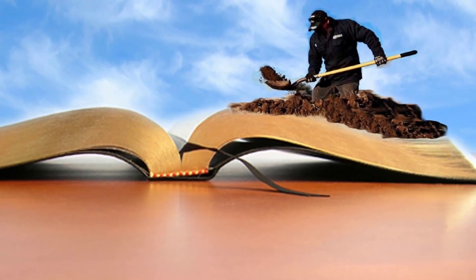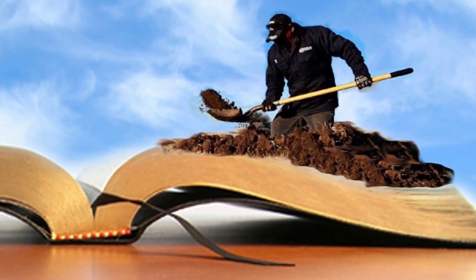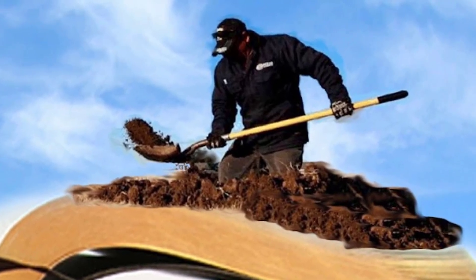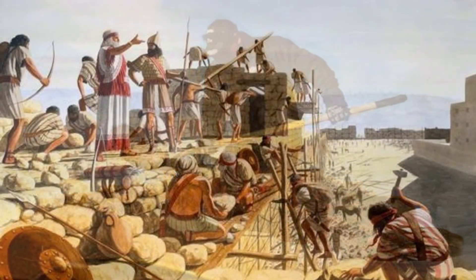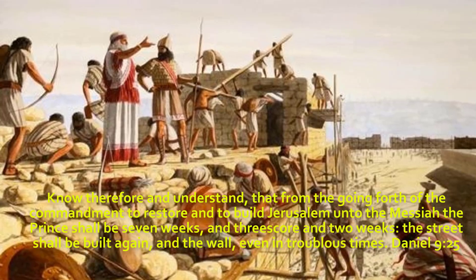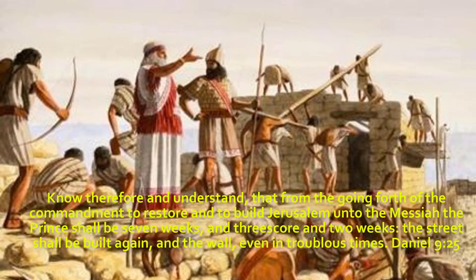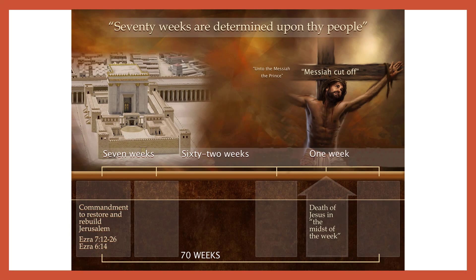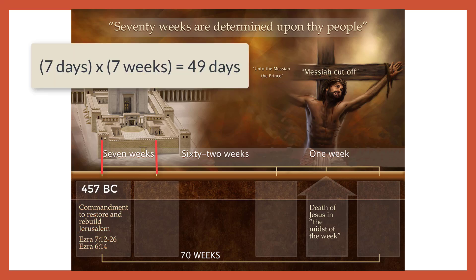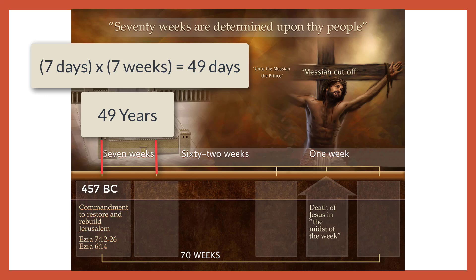Let's dig a little more into the Word of God and history to see if other aspects of the prophecy are fulfilled. Reading the prophecy again, the first stop in the prophetic numbers is the seven weeks: "Know therefore and understand that from the going forth of the commandment to restore and to build Jerusalem unto the Messiah the Prince shall be seven weeks." Something significant must happen at the seven weeks. Seven weeks would be 49 days — 7 days times 7 weeks. Using the day-for-a-year principle, those 49 days would be 49 years. Taking 457 BC down the timeline 49 years takes us to 408 BC.